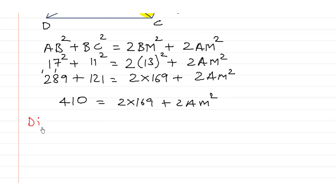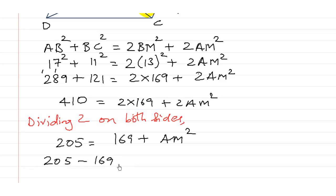Then if we divide 2 on both sides, we shall get 205 is equal to 169 plus AM square. So that is 205 minus 169 is equal to AM square. So if we subtract this, we shall get 36 is equal to AM square.